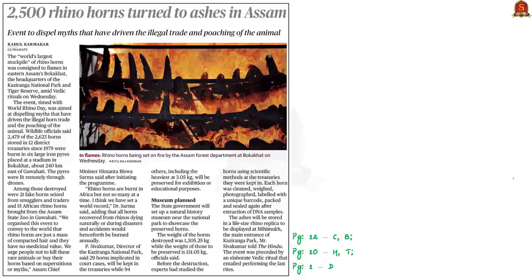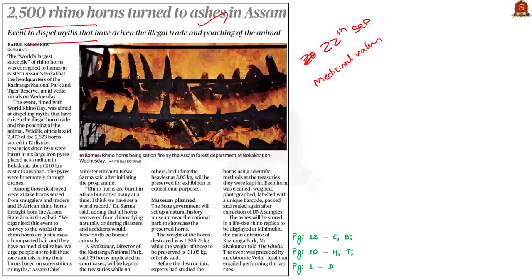Coming to the last article of today's discussion: on 22nd September 2021, the Assam government turned 2500 rhino horns into ashes. This event was held to dispel myths that rhino horns have medicinal value and to prevent poaching of the vulnerable animal. The date was specifically chosen because 22nd September is World Rhino Day. When you come across these specific days in newspapers, you must note five aspects: when it is celebrated, why it is celebrated, which organization started it and when, the theme, and the objective.